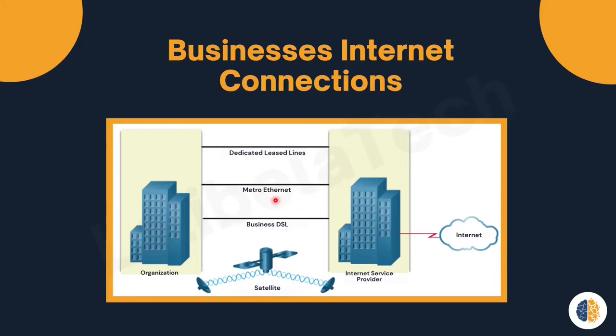The third one is business DSL — Digital Subscriber Lines. Business DSL is available in various forms. A popular choice is the Symmetric Digital Subscriber Line, which is similar to the consumer version of DSL, but here it provides uploads and downloads at the same high speed.